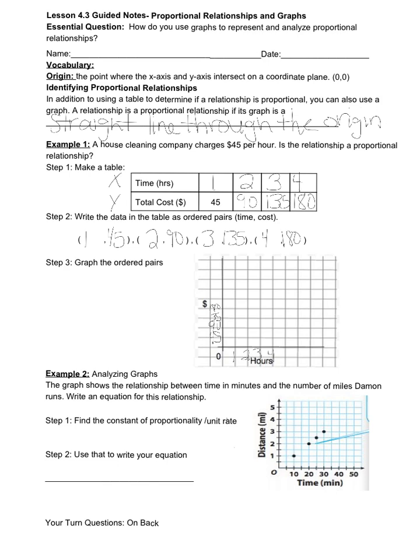Now to plot my first point, I'm going to go over 1 on the x-axis and up to 45. So my first point is right here. To plot my second one, it's at (2, 90). My third is at (3, 135), and my fourth is at (4, 180).